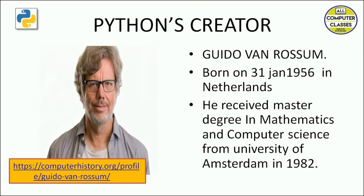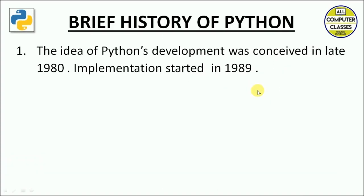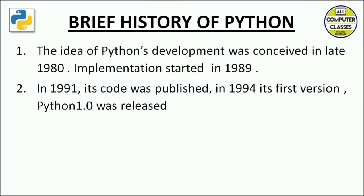Let's talk about a brief history. The idea of Python's development was conceived in the late 1980s and implementation started in 1989. In 1991 its code was published, and in 1994 the first version, Python 1.0, was released.